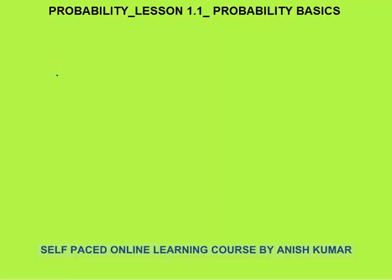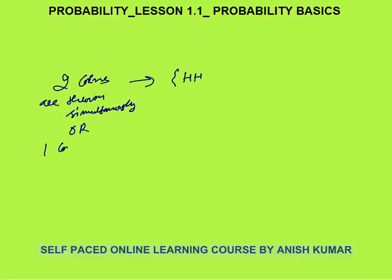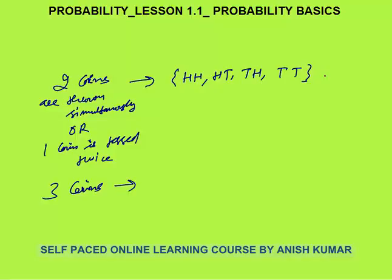Now let me discuss total possible outcomes. When two coins are thrown (or one coin is tossed twice — the same thing), the possible outcomes are: Head-Head, Head-Tail, Tail-Head, and Tail-Tail. These are four possible outcomes.